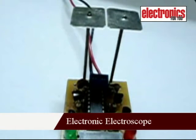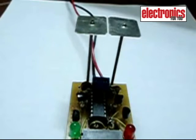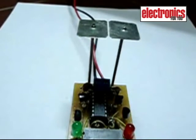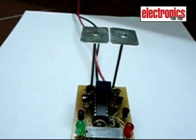This is an electronic electroscope. It is used to detect a charged body. A body gets charged by the friction of one body rubbing against another.